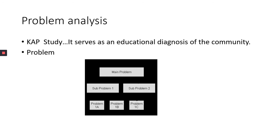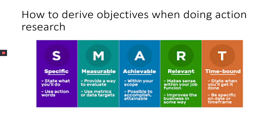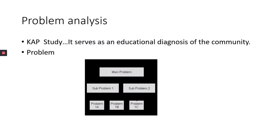When you're talking about a KAP study, you're talking about knowledge, attitude, and practices. Knowledge: do they know what causes that problem? Attitude: do they believe that problem can be eliminated? Do they have a positive or negative attitude towards change? Practices: what practices are they doing to eliminate that problem? What current practices do they know and are trying to use to eliminate that problem? That is what entails problem analysis.